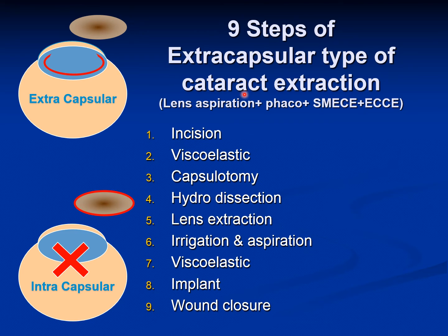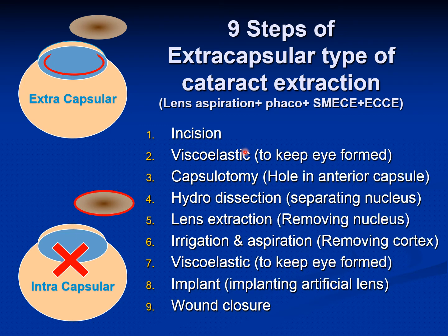There are nine basic steps of cataract extraction: incision, viscoelastic injection, capsulotomy, hydrodissection, lens extraction, irrigation and aspiration, viscoelastic injection again, implant, and wound closure. Viscoelastic is injected to keep the eye firm when the aqueous comes out and the eye deflates. Capsulotomy is making a hole in the capsule so that the lens can come out. Hydrodissection separates the lens from the capsule. Lens extraction removes the nucleus. Irrigation and aspiration removes the cortex. Then viscoelastic is injected again, the implant is placed, and the wound is either closed or left to self-seal.